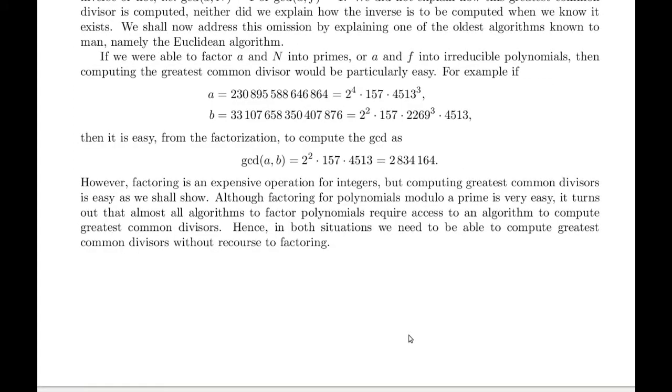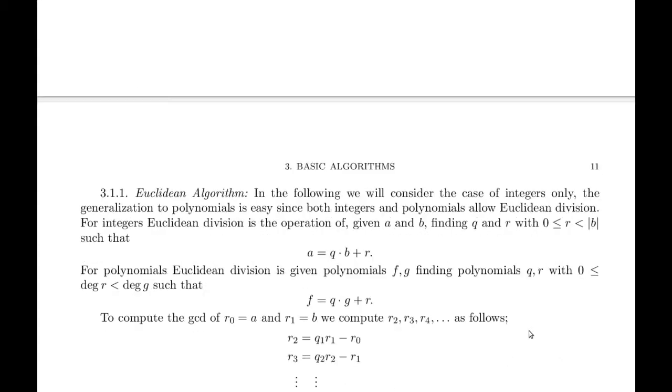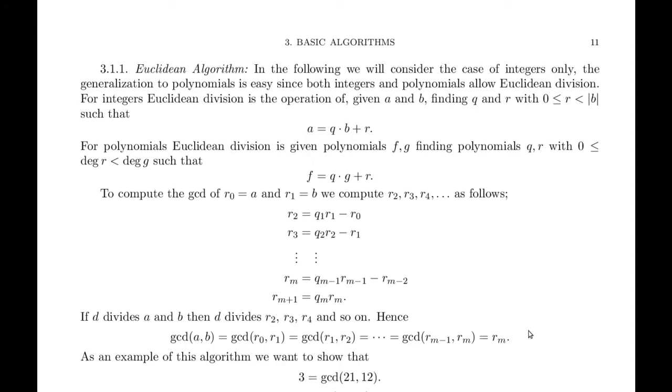However, factoring is an expensive operation for integers, but computing greatest common divisors is easy as we shall show. Although factoring for polynomials modulo a prime is very easy, it turns out that almost all algorithms to factor polynomials require access to an algorithm to compute greatest common divisors. Hence, in both situations, we need to be able to compute greatest common divisors without recourse to factoring. Okay, basic algorithms continued.